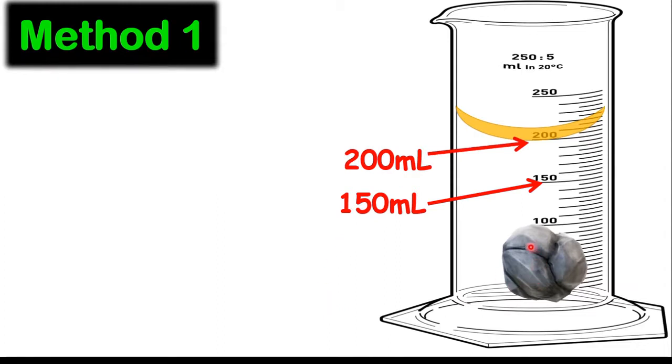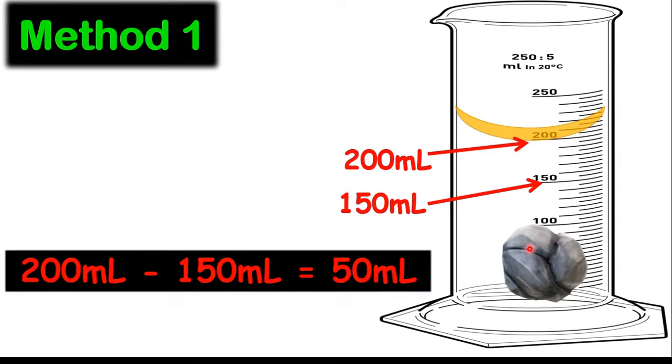Now, to calculate the volume of this rock, for example, we will have to minus these two values. So we take away the first volume from the final volume. And hence, we'll have 50 mL for that rock. That's quite an easy method to do.